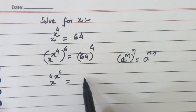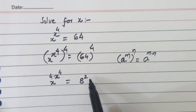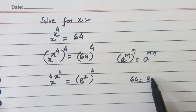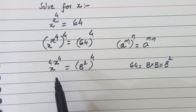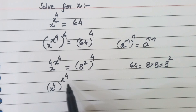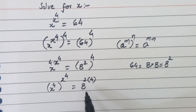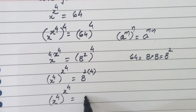On the right hand side, 64 can be written as 8 raised to the power 2, raised to the power 4. Again applying the power rule, s to the power 4 to the power s to the power 4 is equal to 8 raised to the power 2 times 4, which gives 8 to the power 8.